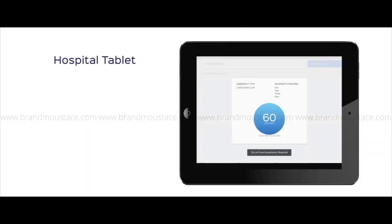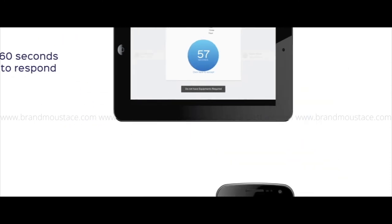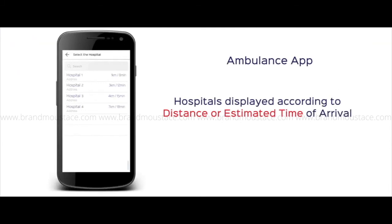These hospitals get to accept the alert that is displayed on their dedicated tablet application, depending on the availability of equipment and doctors. The paramedic is notified on the ambulance application of the hospitals that have accepted the alert, and can select the hospital based on distance or travel time.